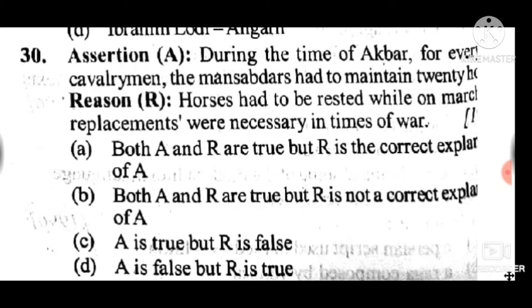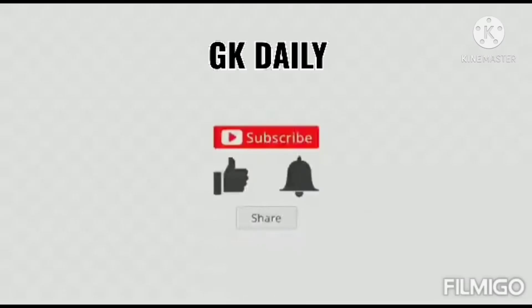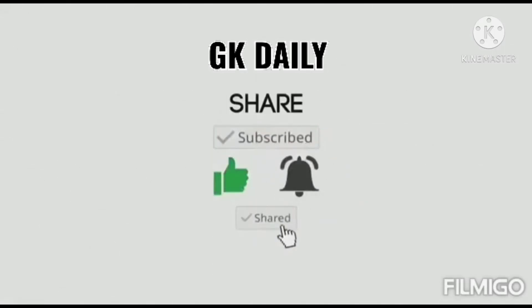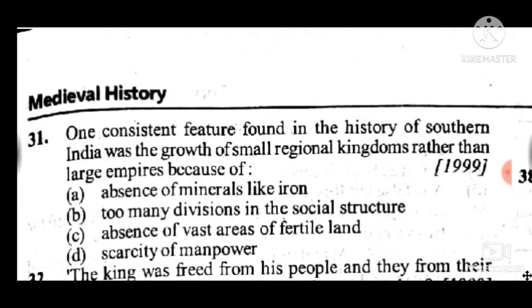Question 30: During the time of Akbar, for every cavalryman the Mansabdar had to maintain 2 horses. Horses had to be rested while on march; replacements were necessary in times of war. Answer to question 30 is D: A is false but R is true. Question 31: One consistent feature found in the history of southern India was a growth of small regional kingdoms rather than large empires because of — answer to question 31 is C: absence of vast open areas.